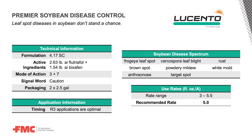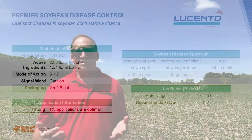Some of the key aspects of Lucento: it has two modes of action. It has a Group 3 triazole, flutriofol, which is a very mobile, very persistent compound. It has a low KOW value, so it readily mobilizes with water and nutrients, moves through the plant, translocates, and has high systemic activity along with long residual. Bixafen is a Group 7 SDHI — a newer SDHI that has not shown any cross-resistance with older SDHIs on the market. It is also highly mobile, moves into the plant tissue, and has long residual activity. In university trials, Lucento has consistently shown to be one of the top performers in suppressing soybean leaf diseases and delivering greater yield return.